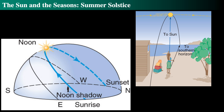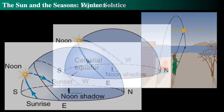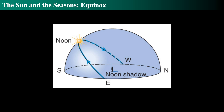In the winter solstice, the sun is not up above the horizon as much. At the equinoxes, the sun rises due east and sets due west. That's the effect of this tilt of the Earth's axis and the Earth going around the sun.